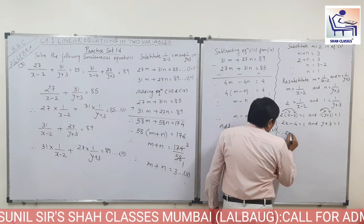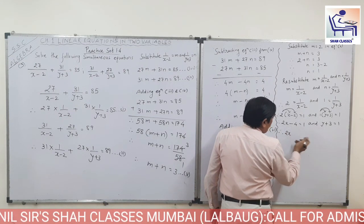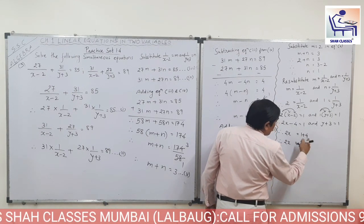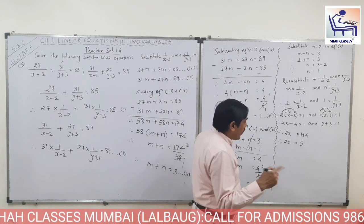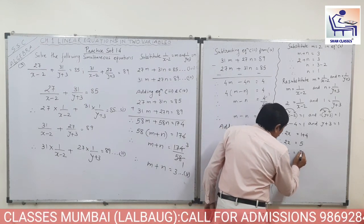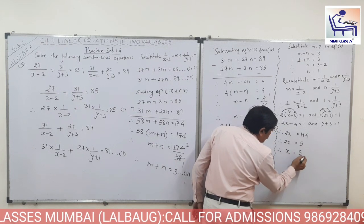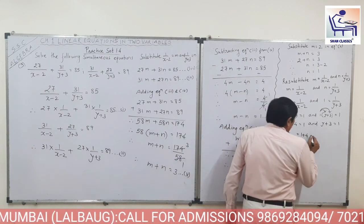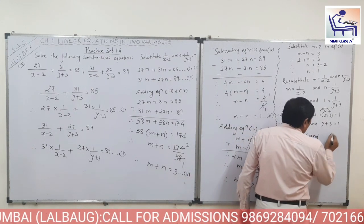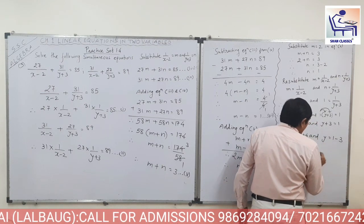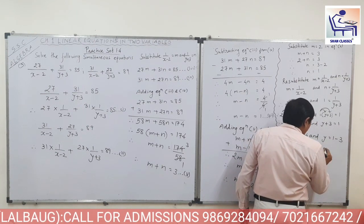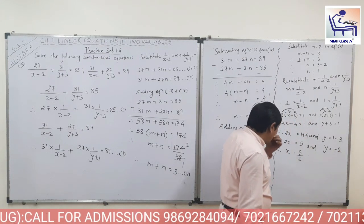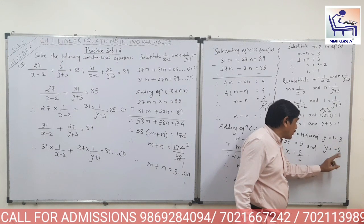Now, minus 4 goes to the other side and becomes plus 4. So 2x is equal to 1 plus 4 is 5, so x is equal to 5 upon 2. I got the value of x as 5 upon 2. And for y: y plus 3 is equal to 1, so y is equal to 1 minus 3, which gives y is equal to minus 2.